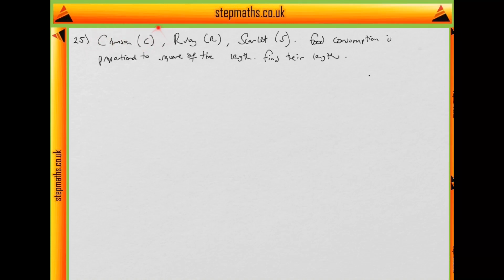And we're told that the types are crimson, which we'll call C, ruby, which we'll call R, and scarlet, which we'll call S. And we're given three bits of information, and we're told to use these to find their length. The way I'm going to do this question is I'm going to make the point A, B, C, and then write down,